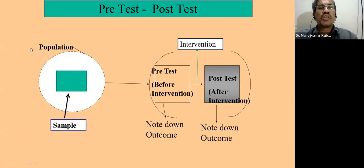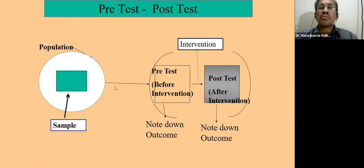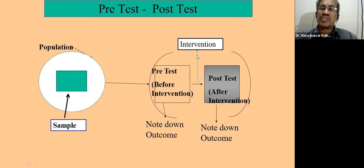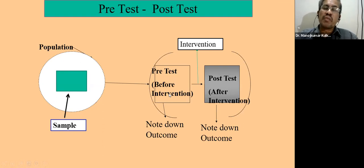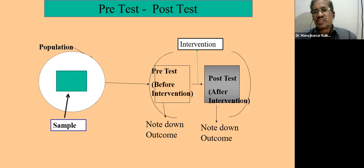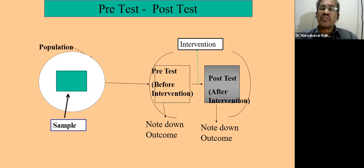In a pre-test post-test design, we have a population of interest and take a sample. We make the measurement before the intervention — the pre-test — note down the outcome of interest, then the subjects undergo the intervention, and after intervention we make the post-test measurement. For example, if going to the gym to reduce weight, we take a random sample of 20 persons, measure their weight before gym, they attend gym for six months, then we measure again. Whether the mean change from pre-test to post-test is statistically significant determines our conclusion.